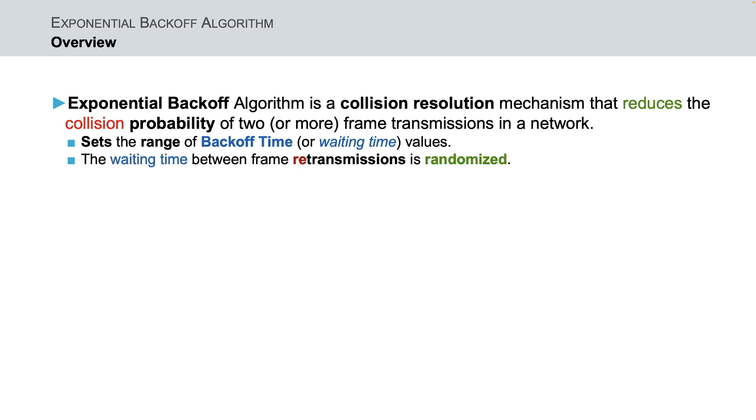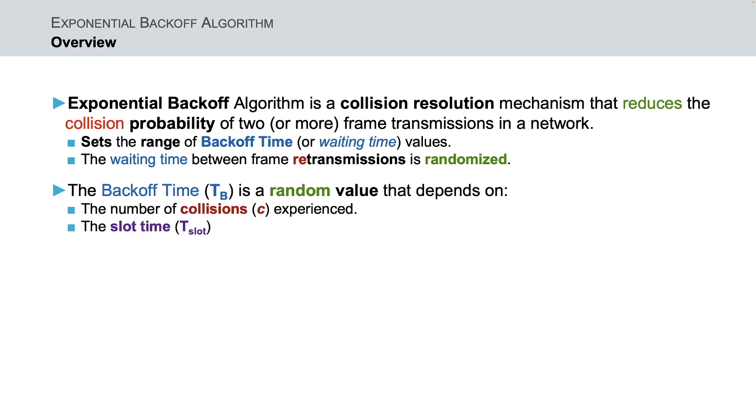The exponential back-off algorithm randomizes this waiting back-off time between the frame retransmissions. Thus, the back-off time is a random value that depends on the number of collisions experienced and on a slot time, where the slot time can be expressed, for example, as the maximum propagation time or frame transmission time and it is implementation dependent.